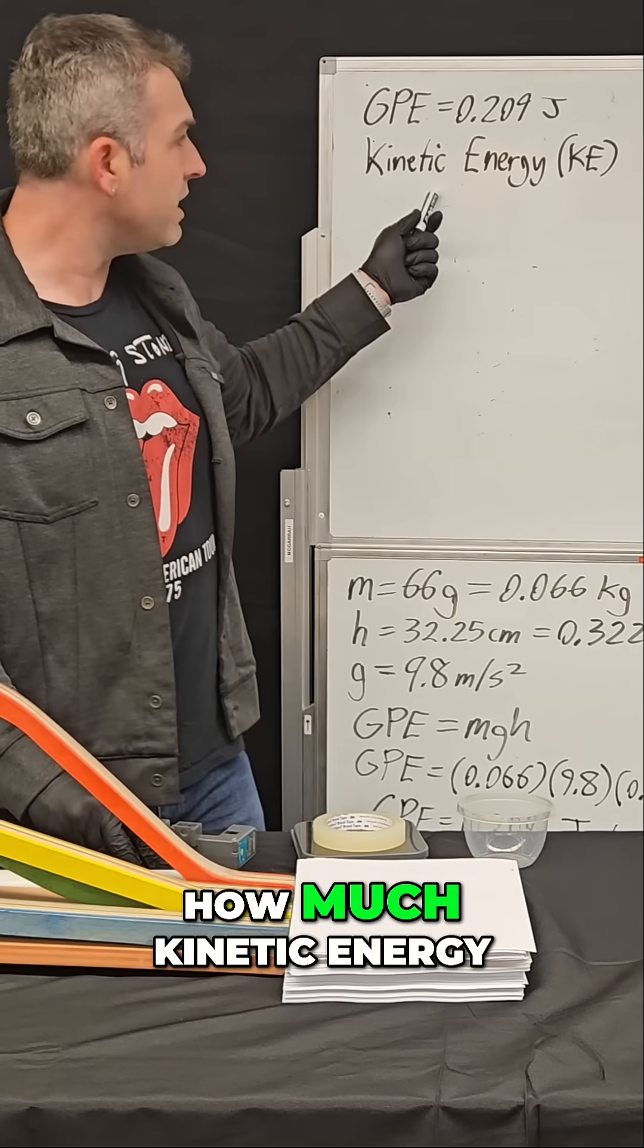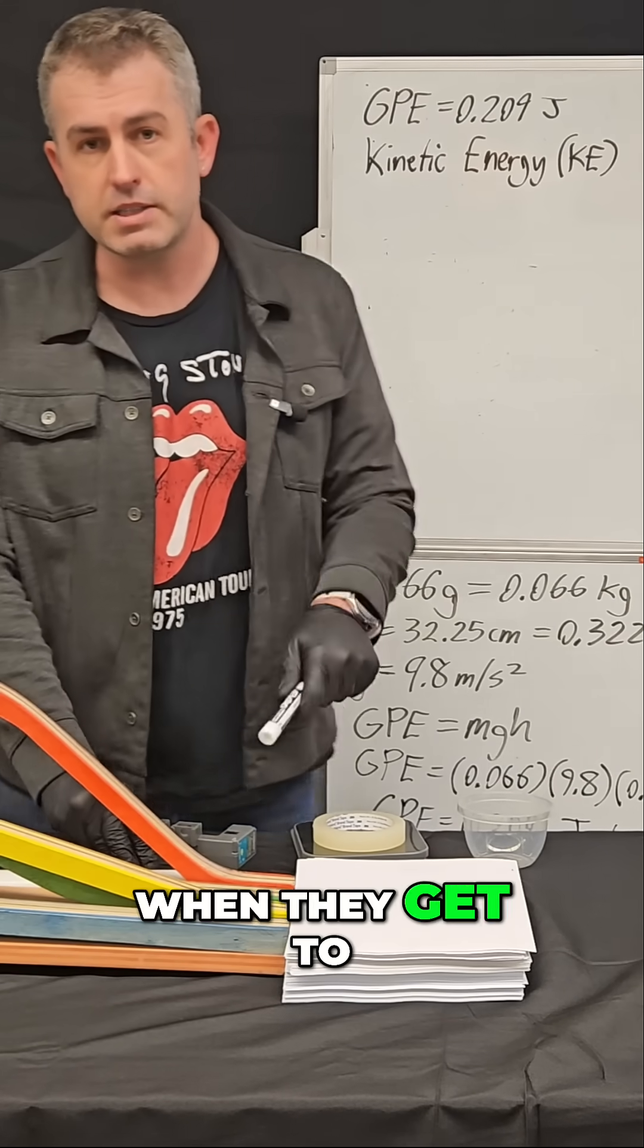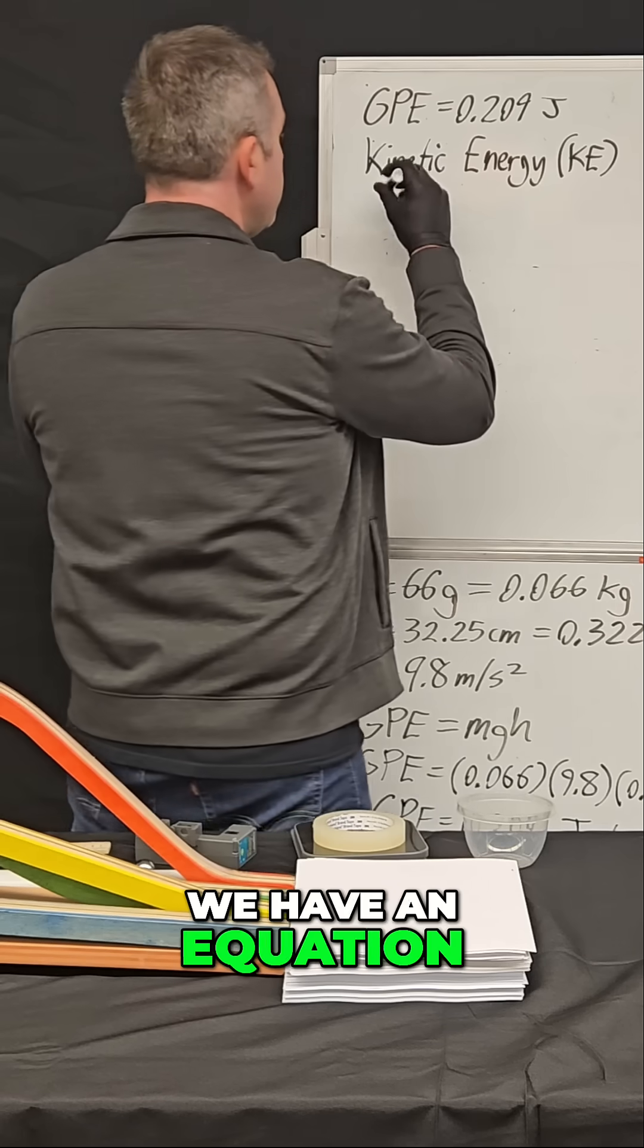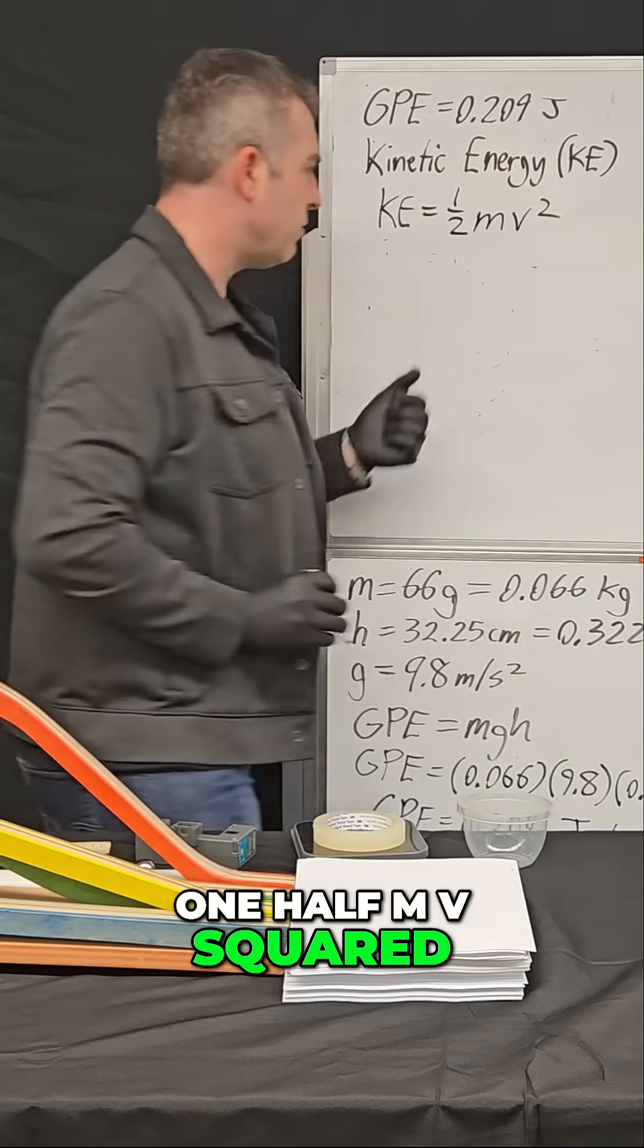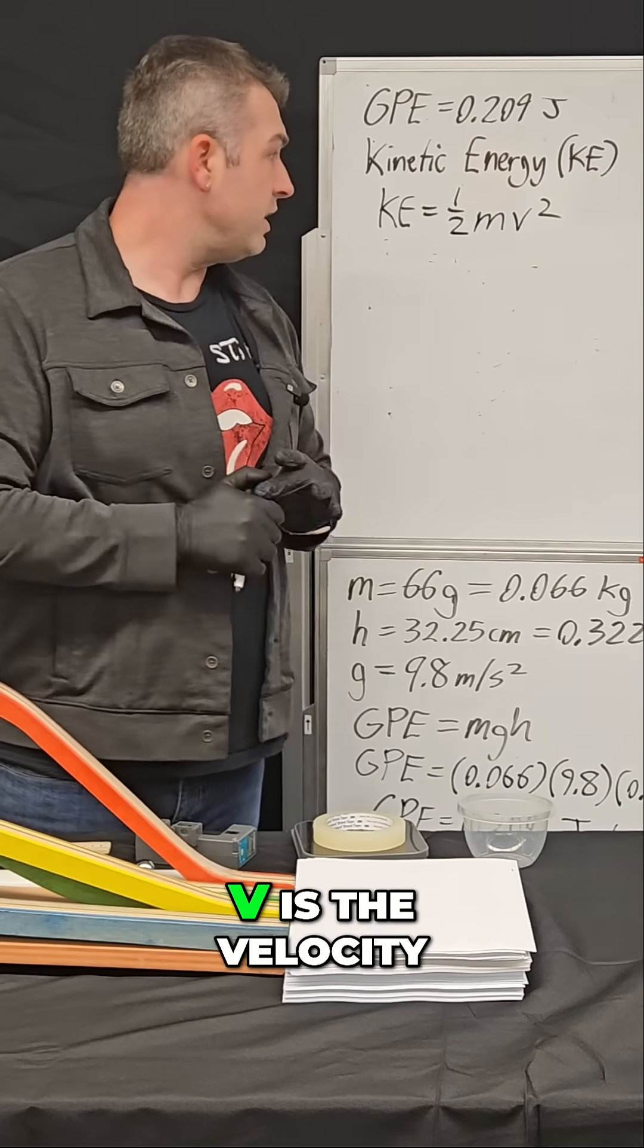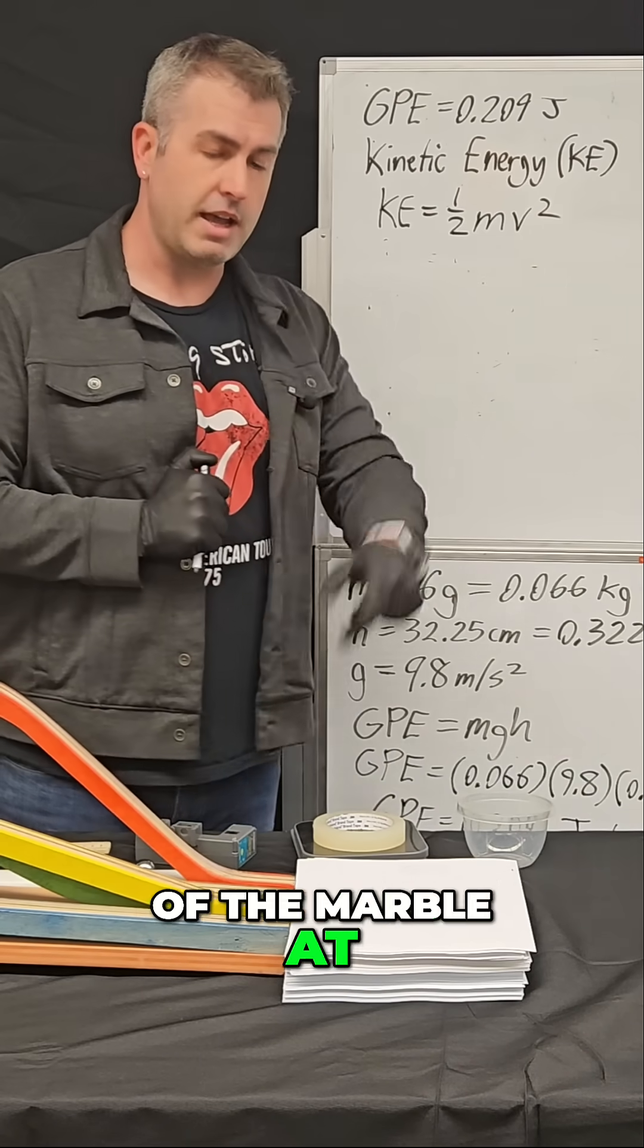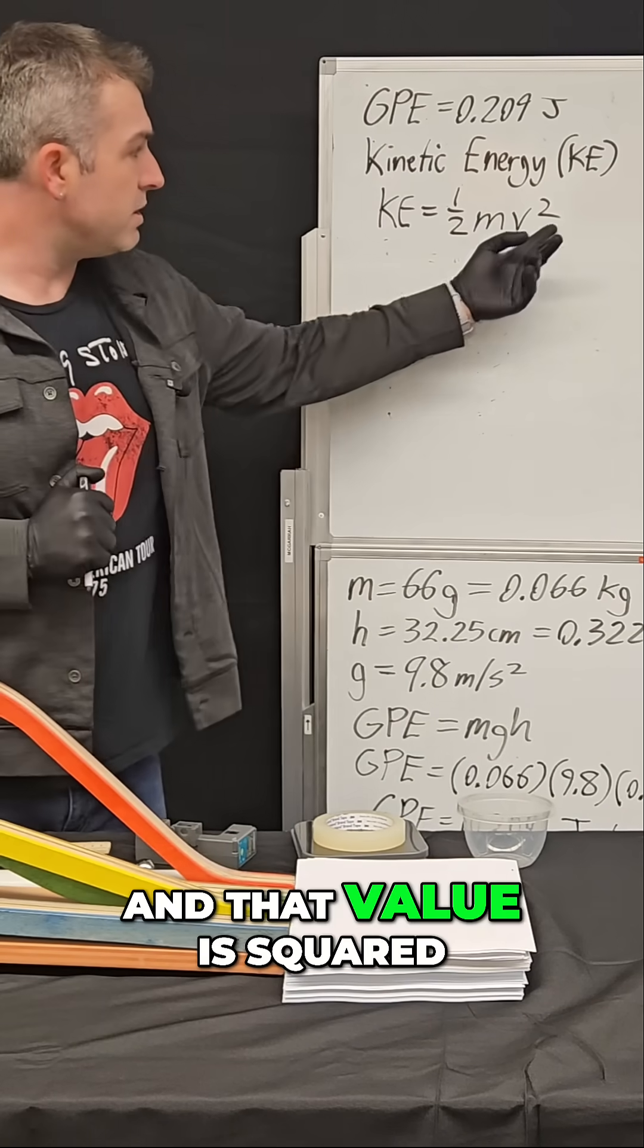The question is, how much kinetic energy do these marbles have when they get to the bottom? We have an equation for that, and it's equal to one-half mv squared, where m is the mass of the marble, v is the velocity of the marble at that position, and that value is squared.